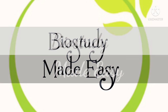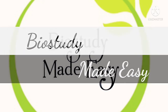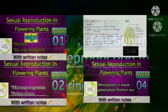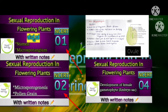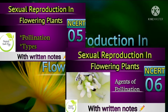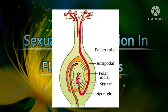Welcome back, dears. You're watching Biology Study Made Easy. We were discussing sexual reproduction in flowering plants. We have covered formation of male and female gametes, pollination and types of pollination, agents of pollination, and pollen-pistil interaction. We also covered pollen tube formation, and the pollen tube entering the embryo sac.